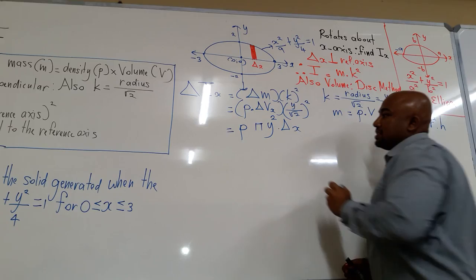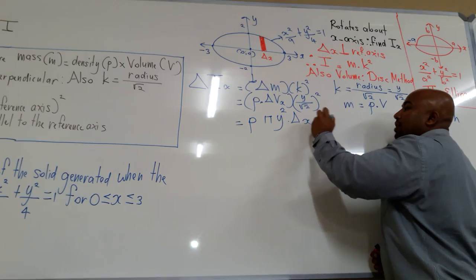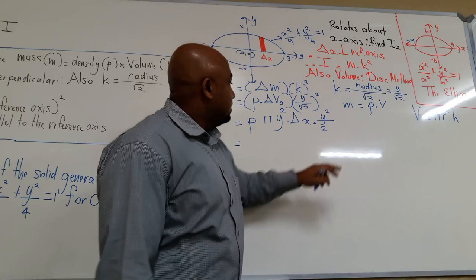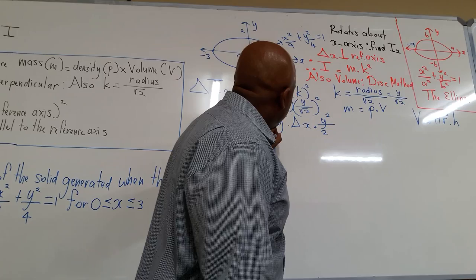Substituting k equals y over root 2, k squared is y squared over 2. Combining everything, taking constants rho pi divided by 2 out front, we have delta Ix equals rho pi over 2 times y to the power of 4 times delta x.